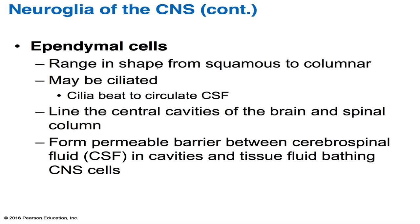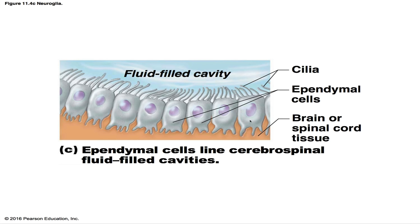Ependymal cells range in shape from squamous to columnar, and many are ciliated. Their cilia beat to circulate the cerebrospinal fluid (CSF). They line the central cavities of the brain and spinal cord, forming a fairly permeable barrier between the CSF in those cavities and the tissue fluid bathing the cells of the CNS.